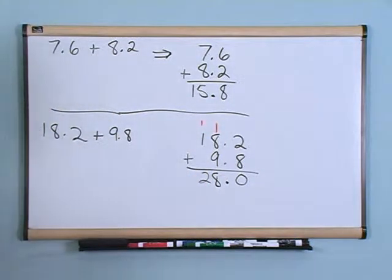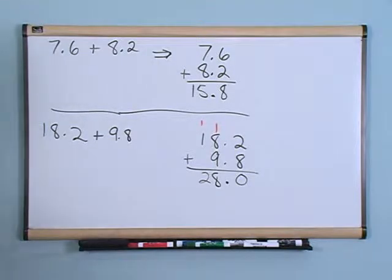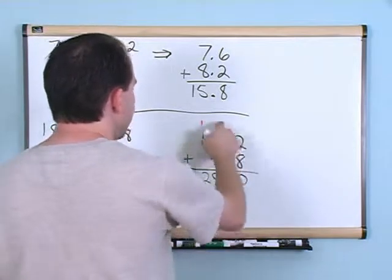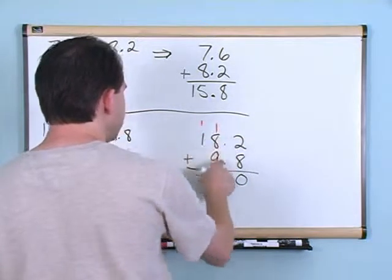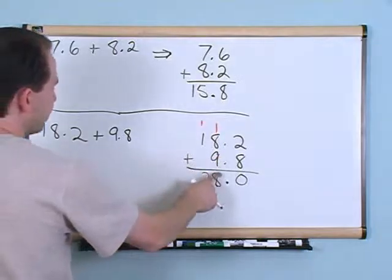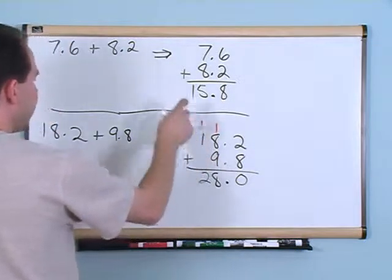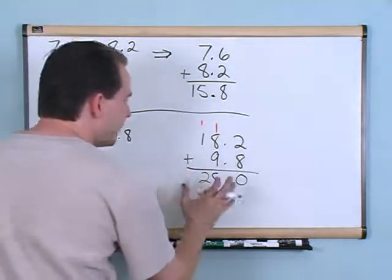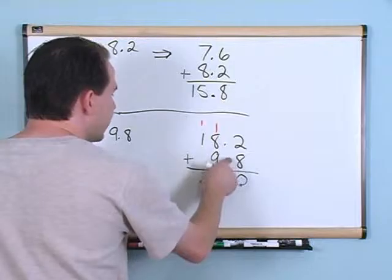And then finally 1 plus 1 gives me 2. Whenever you finish your problem you take your decimals that you have lined up and drag it down, putting it right between the numbers. This is exactly the same methodology and exactly the same steps as in the previous section when we started adding numbers.